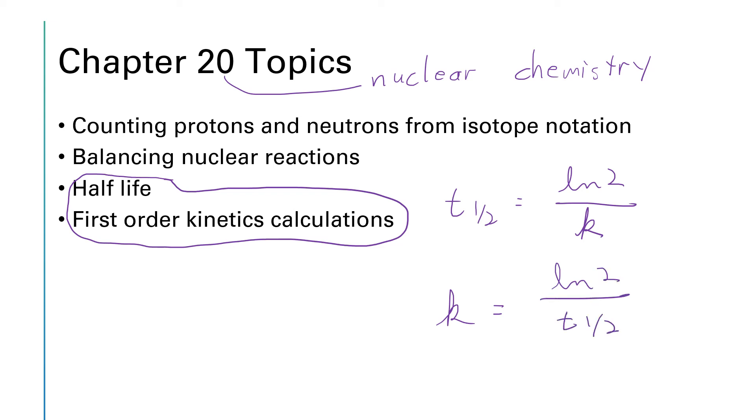But before we can get to the kinetics part, the first part of the chapter is going to be about balancing nuclear reactions. And so dust off some of that early chapter from Gen Chem 1 material in terms of the isotope notation, where we have something like 13,6 C, which tells us that carbon has six protons and seven neutrons, because we're going to need that notation in order to write and balance the nuclear reactions that are going along with these kinetics processes.